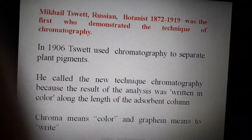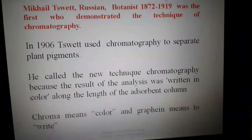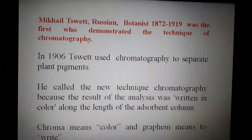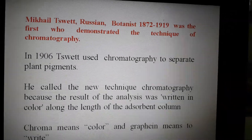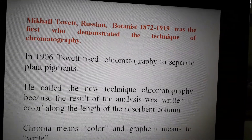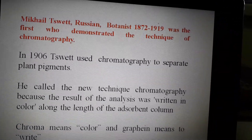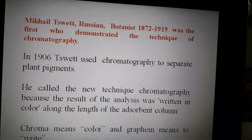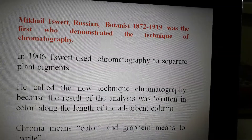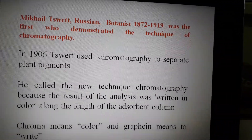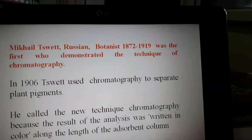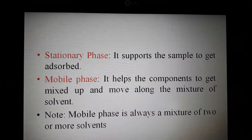This chromatography technique was given by the scientist Tswett. He performed chromatography using plant pigments — he took leaves, crushed them, and separated out chlorophyll a, chlorophyll b, xanthophyll, and other components present in plant material. He called this technique 'chromatography' because 'chroma' means color, and different colors were separated out using this technique.